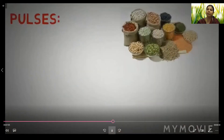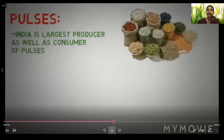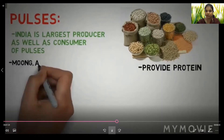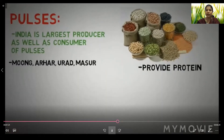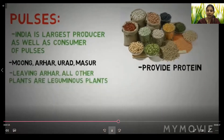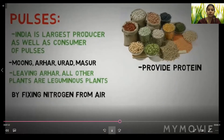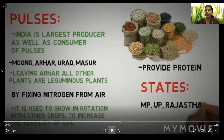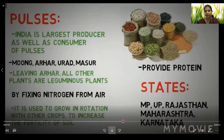The fifth crop is pulses, also known as dal. India is the largest producer as well as consumer of pulses. They are an important source of protein — examples include moong, arhar, urad, and masoor. Except for arhar, all are leguminous plants, meaning they improve soil fertility by fixing nitrogen from the air. They are grown in rotation with other crops to increase soil fertility. States that grow pulses include MP, UP, Rajasthan, Maharashtra, and Karnataka.